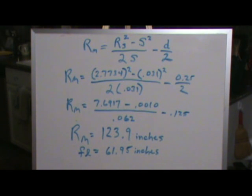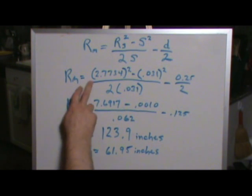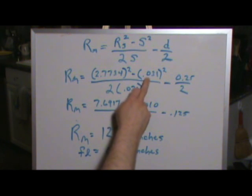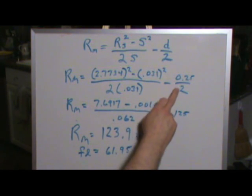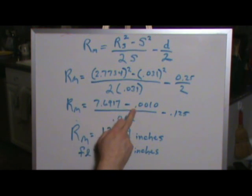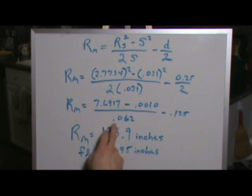So in the case of the mirror that we just measured, our sagitta was 0.031 inches, so the radius of the mirror is 2.7734, that being the radius of our spherometer itself, squared minus 0.031 squared divided by two times 0.031, quantity minus 0.25 over two. That reduces a little bit, radius of the mirror is 7.6917, that's the radius squared, minus 0.0010, that's the sagitta squared, over 0.062, that's two times the sagitta, minus 0.125, half of that. So if you work the math on that, the radius of the mirror is 123.9 inches. Divide that in half to get the focal length, so the focal length would be 61.95 inches.